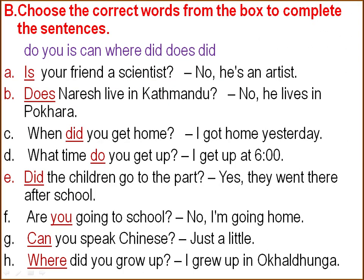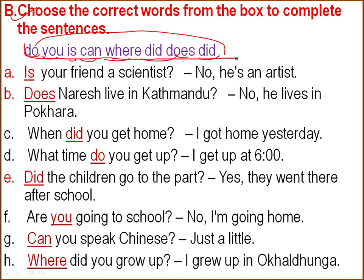Exercise B: choose the correct word from the box — do, you, is, can, where, did, does — to complete the sentences. Is your friend a scientist? Does Norris live in Kathmandu? When did you get home? I got home yesterday. What time do you get up? I get up at 6 a.m.